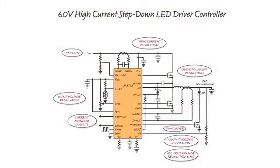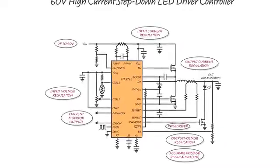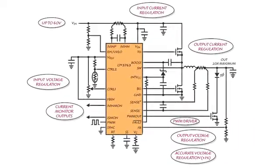The LT3763 is a 60V synchronous step-down DC-DC controller designed to accurately regulate LED current at up to 20A with fast PWM dimming. It is a higher-voltage version of its predecessors, the LT3743 and the LT3741.